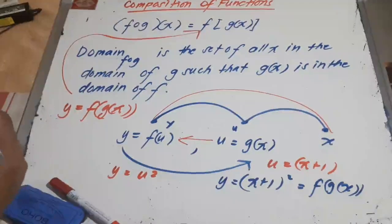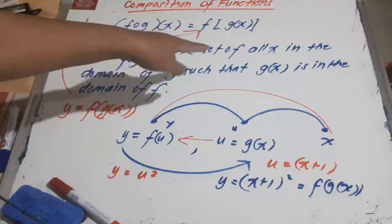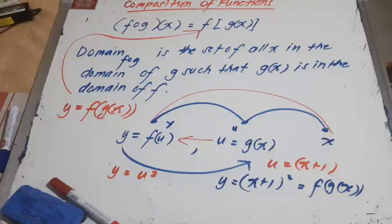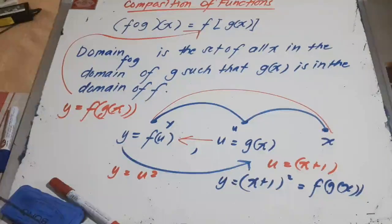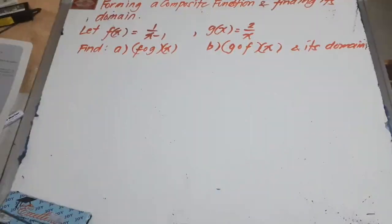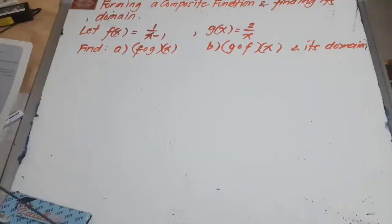That is what we call a composite function. When it comes to the domain of this composite function, it is the set of all x in the domain of g such that g of x is in the domain of f. I will explain this by giving an example in finding the domain of the composite function and the resulting domain.